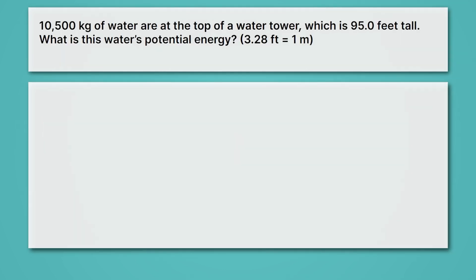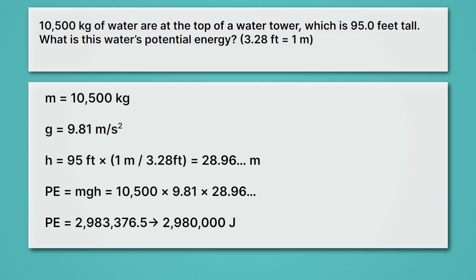Now it's your turn to give this a try. Here we're told that 10,500 kilograms of water are at the top of a water tower. That's a lot of water, which is 95 feet tall. What is this water's potential energy? Give it a try and see if you can calculate this potential energy. Did you get it? Well, we know the mass is 10,500 kilograms. We know our gravitational acceleration. We know our height. Critically, we have to convert our height from feet to meters, so we can use it in the potential energy equation. When we do that and we multiply mass times gravity times height, we should get 2,980,000 joules. That's a lot of potential energy.